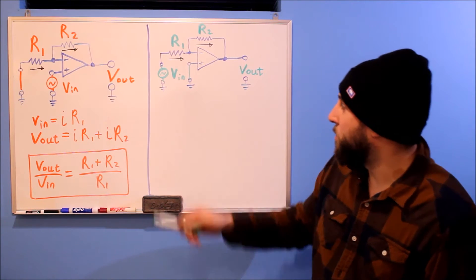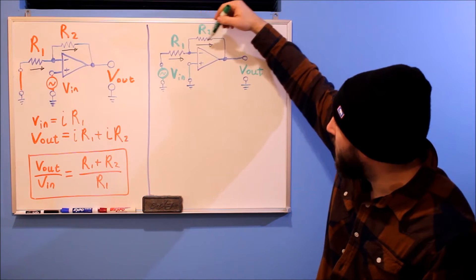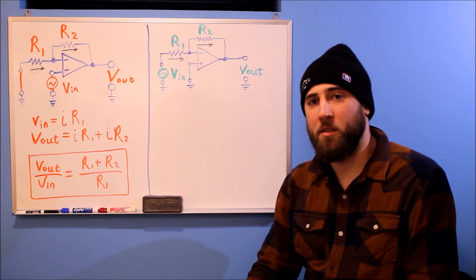And just like before, the current doesn't really have any place to go, except for through R1 and then up through R2. So both currents are the same.